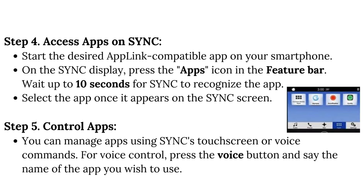Step 4: Access apps on Sync. Start the desired AppLink-compatible app on your smartphone. On the Sync display, press the apps icon in the feature bar. Wait up to 10 seconds for Sync to recognize the app, then select the app once it appears on the Sync screen.